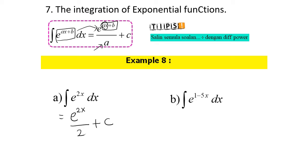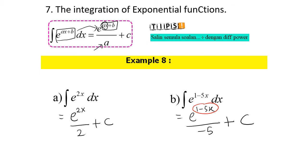Next, the integration of e^(1-5x) dx. First, we copy the question: e^(1-5x), divided by — in this case, when we differentiate 1 minus 5x, we're going to have negative 5. Then plus c. Simple.